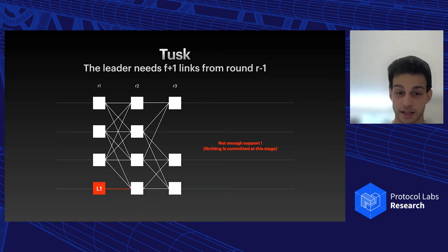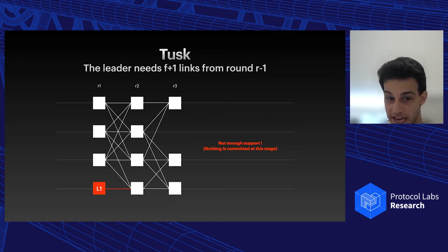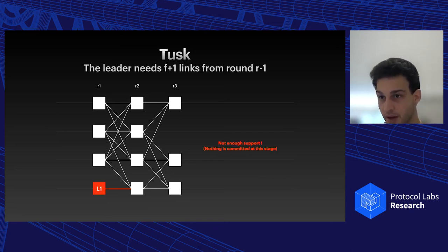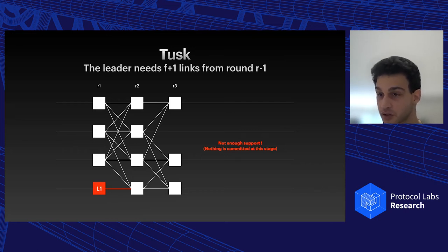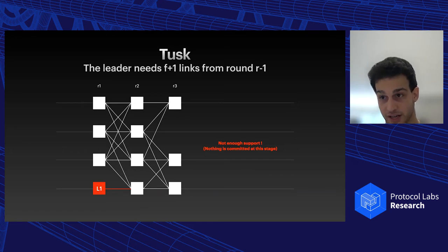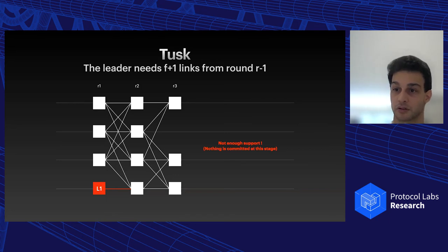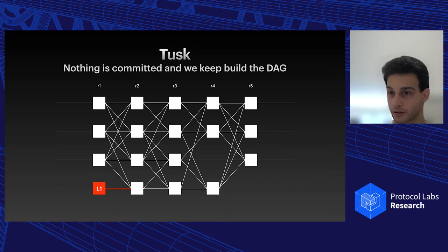Now that we have the common coin and know who the leader of round one was, we ask: how much support does that leader have? Support means how many nodes from round two linked to that leader. If it's only one, and we need f+1 support, the leader doesn't have enough support and we just continue without doing anything — no view change even though the leader is considered to have failed.